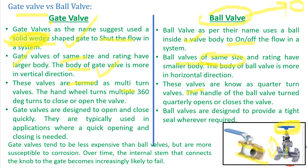Ball valves are known as quarter-turn valves. The handle is connected to the ball, and when one quarter of the handle is rotated, the hole moves to the other side of the valve and the flow stops. Gate valves are designed to open and close quickly and are typically used in applications where on/off operation is needed. Ball valves provide a tight seal — when the hole moves to the other side, there is no flow — so wherever a tight seal is required, ball valves are used.